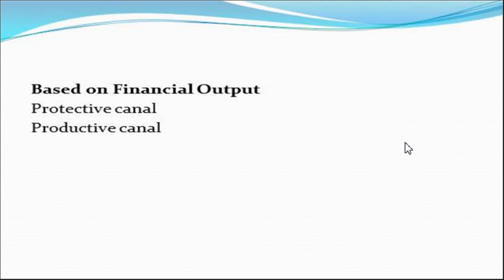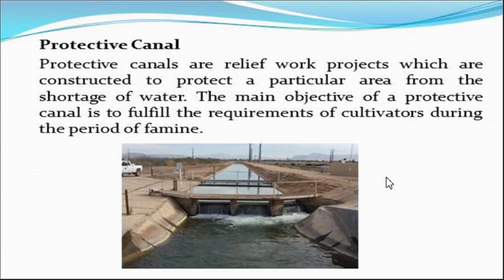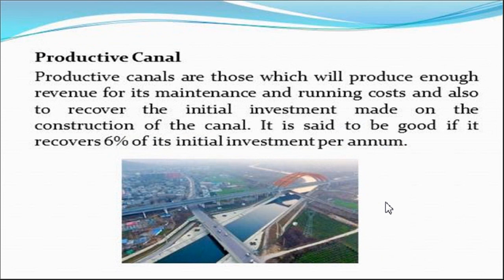Classification based on financial output gives two types: protective canal and productive canal. A protective canal is constructed to protect a particular area from shortage of water. A productive canal produces or increases revenue for its maintenance and running costs and recovers the initial investment made on construction. It is said to be a good canal if it recovers six percent of its initial investment per annum.